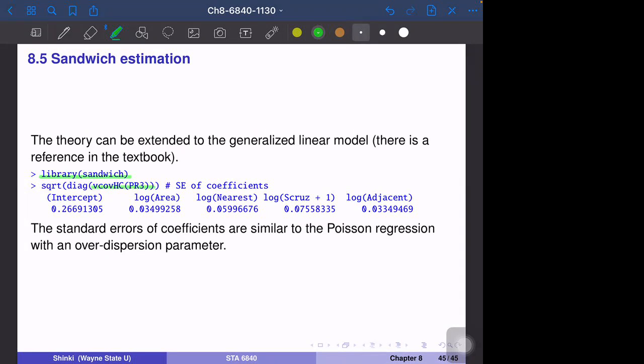In R language, we can use the sandwich library and the vcov HC function to calculate the variance covariance matrix. This function calculates the variance of beta hat. PR3 is the Poisson regression model applied for the Galapagos Island data. If we calculate the standard deviation of those variables, these are the standard deviations. If the observations are highly correlated, these estimates are much larger, but for this specific example the difference is negligible.